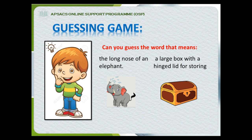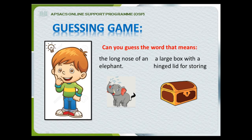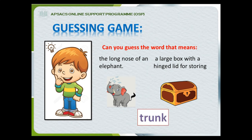Now let's play a guessing game. Can you guess the word that means the long nose of an elephant, and also means a large box with a hinged lid for storing things? The word is trunk. The first meaning of trunk is the long nose of an elephant, and the second meaning is a large box used for storing objects.